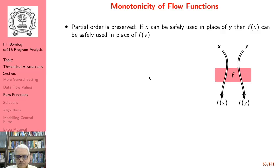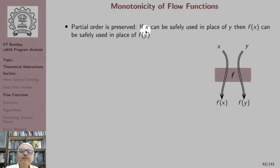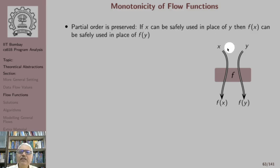There are two important properties. The first property that we talk about is monotonicity. We want flow functions to be monotonic. Monotonicity implies order preservation, which means that the function preserves the order in its input. What that means is that if X can be safely used in place of Y, then F of X can be safely used in place of F of Y.